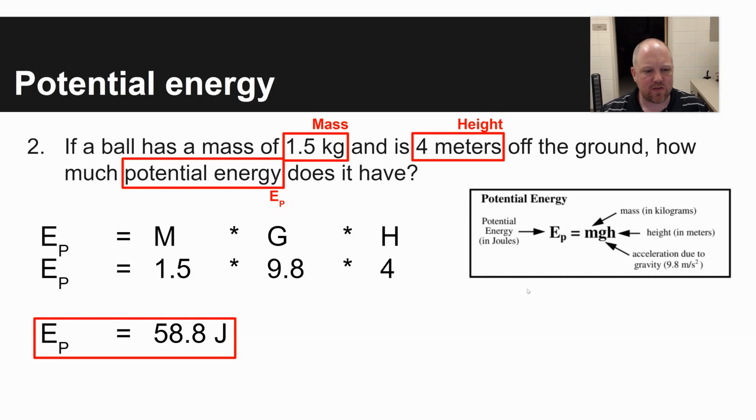So energy potential that you're solving for is 1.5, that's your mass, times 9.8, that's acceleration due to gravity, times four is your height in meters off the ground, for a total potential energy, or E sub P, of 58.8 joules.